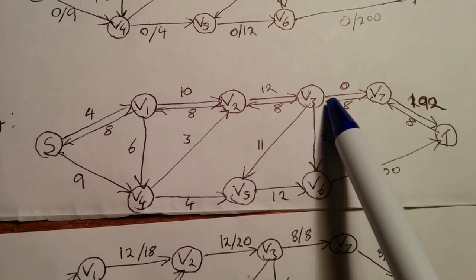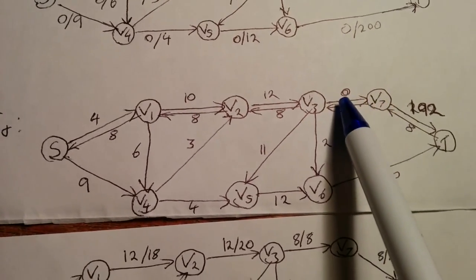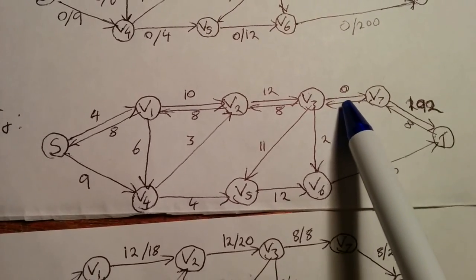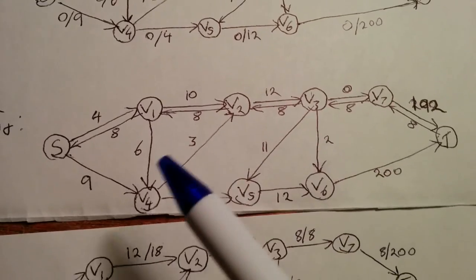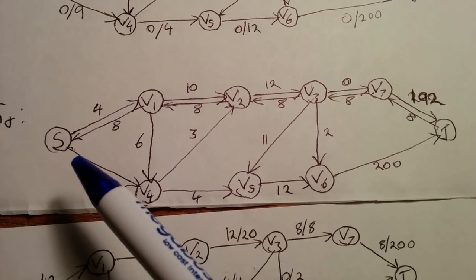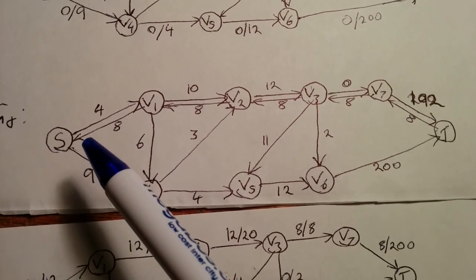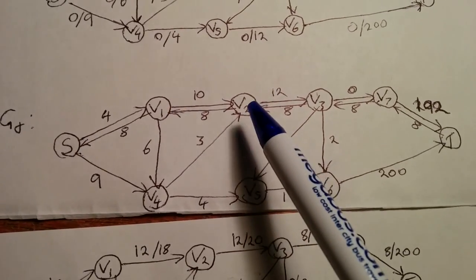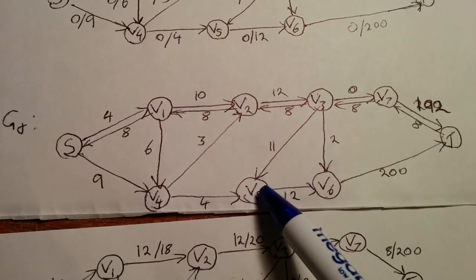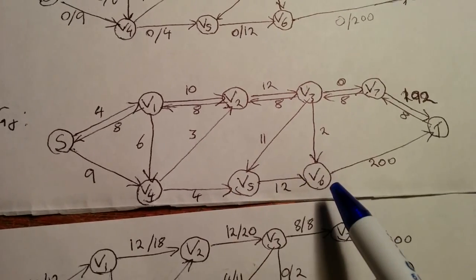But as you can see, V3 to V7, it's 0, and then 8 back, because the capacity was 8, and we filled the entire capacity. So looking at this, we can now see that we can then push another 4 going from S to V1, V1 to V2, V2 to V3, V3 to V5, V5 to V6, and then V6 to T.